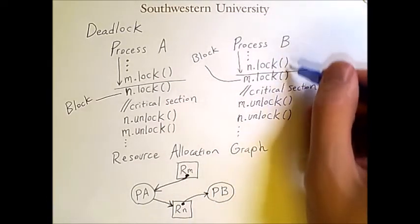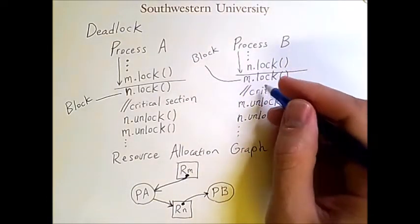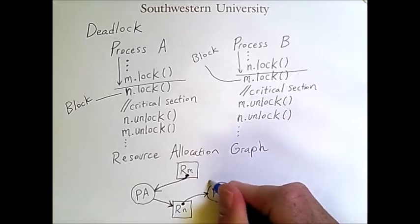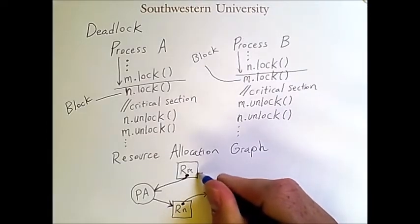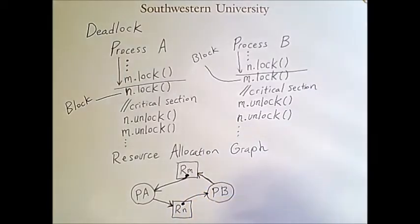Similarly, process B requests resource M. So we draw this. And the result is a cycle in this graph.